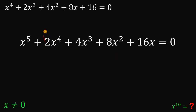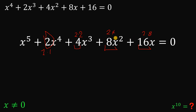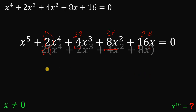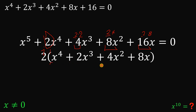Notice that 2, 4, 8, and 16 follow a pattern: 2 times 1 is 2, 2 times 2 is 4, 2 times 4 is 8, and 2 times 8 is 16. We can factor out a common factor of 2 from these four terms, giving us 2 times the quantity x raised to the fourth power plus 2x cubed plus 4x squared plus 8x. So we replace our original expression with this factored form.